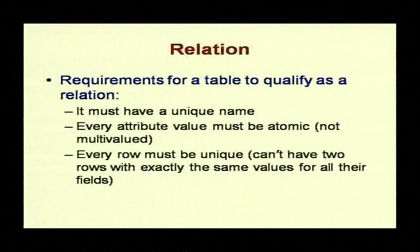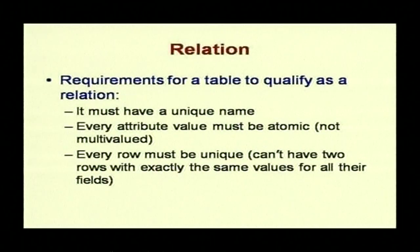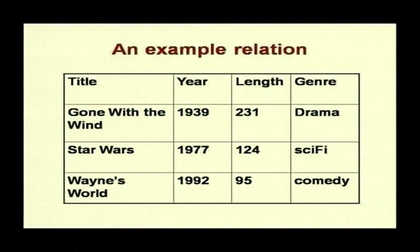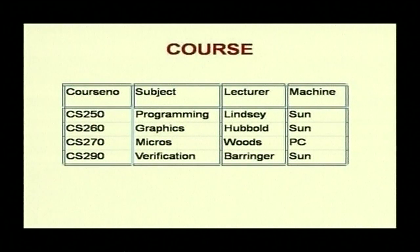Requirements for a table to qualify as a relation: it must have a unique name; every attribute value must be atomic and not multivalued; every row or tuple must be unique — you cannot have two rows with exactly the same values for all attributes. The order of columns and rows can be arbitrary. An example is the movie schema, and there is also a course relation example.